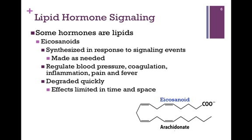In another type of hormone signaling, we have eicosanoids. These are synthesized in response to signaling events, and so they're made as needed, which is different from some of the others we've considered. They regulate things such as blood pressure, blood coagulation, inflammation, pain, and fever. They're degraded very quickly, and the effects are limited in time and space, making them unique in that regard.